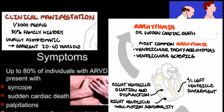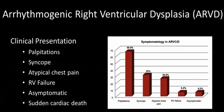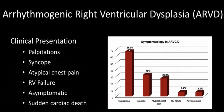Symptoms are usually exercise-related. The right ventricle is more involved than the left ventricle. Because of right ventricular dilatation there is RV dysfunction, and the person can also present with right ventricular failure signs. Scar tissue gives rise to arrhythmias including ventricular ectopics, ventricular tachycardia, and ventricular fibrillation. When the left ventricle starts getting involved, symptoms of left ventricular dysfunction appear. The commonest presentation is palpitation in almost 67% of people, syncope in 32%, chest pain in 27%, RV failure in 6.2%, and 6.2% are asymptomatic.